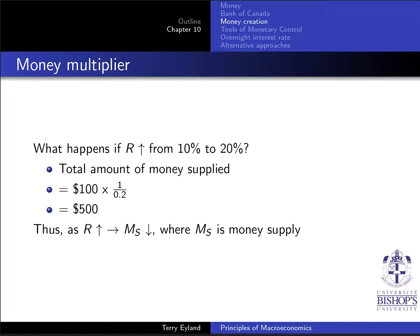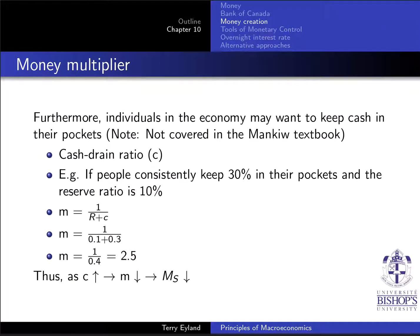Another concept — covered in other textbooks but not this one — is the cash drain ratio. If you receive an extra hundred dollars, you might not deposit the whole amount in the bank. Therefore, it's not true that the whole hundred dollars gets multiplied. A certain amount of money gets 'cash drained' because people want to keep a certain percentage as cash.